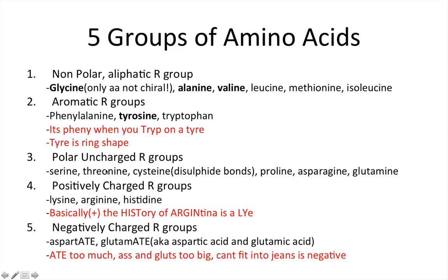The polar uncharged R groups include serine, threonine, cysteine (which has disulfide bonds), proline, asparagine, and glutamine. The positively charged R groups include lysine, arginine, and histidine — you can remember this as 'the history of Argentina is a lie,' which also helps you remember they are positively charged, sometimes labeled as basic amino acids. The negatively charged amino acids include aspartate and glutamate, also called aspartic acid or glutamic acid. The memory aid: 'I ate too much, my ass and glutes are too big, can't fit into my genes' — and the negative refers to negatively charged.